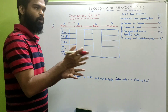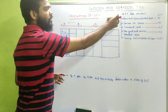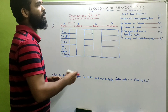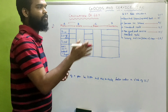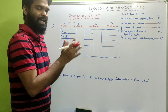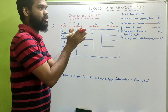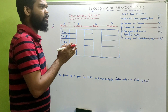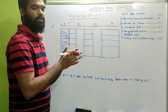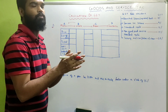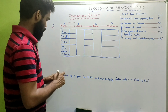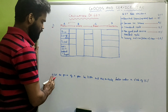First, look at the GST rate structure fixed by the government. On essential items and unpacked food, the rate is 0%. Common use items are taxed at 9%. The standard rate of GST is 12% for maximum goods and services, and 18% is also a standard rate. For luxury and sin items such as tobacco, the rate is 28%.